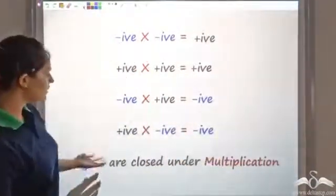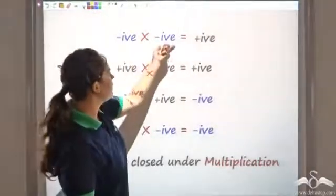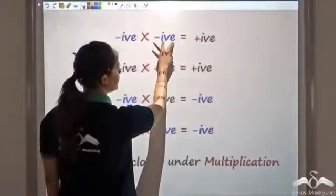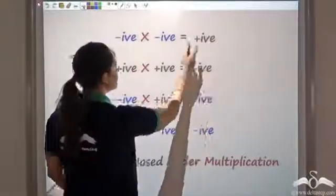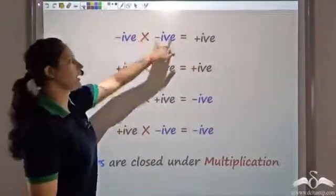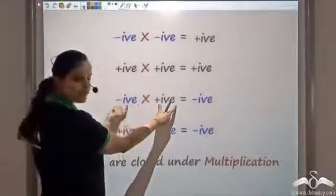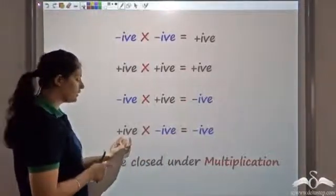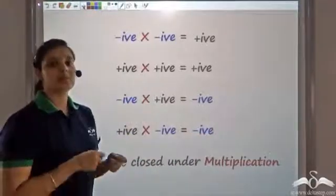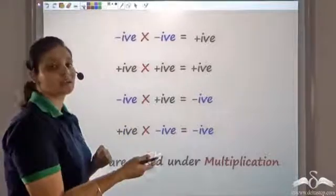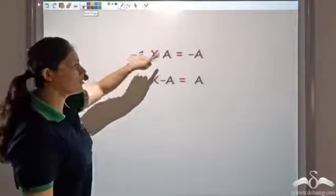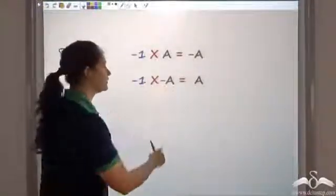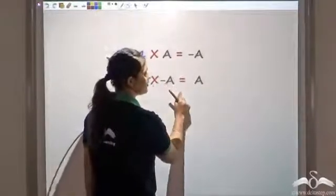Another interesting observation: whenever I multiply a number by a negative number, the sign reverses. If I multiply negative one with a negative number, the sign of that number reverses and it becomes positive. Similarly, if I multiply a positive number by a negative number, the sign reverses and it becomes negative. So whenever you multiply negative one with any number a, the sign reverses and you get negative a.